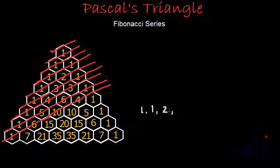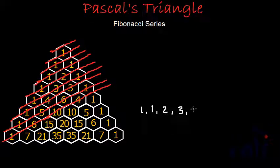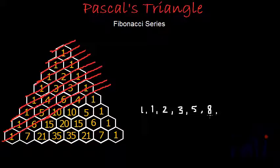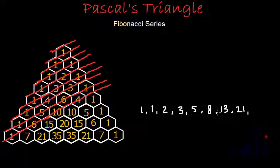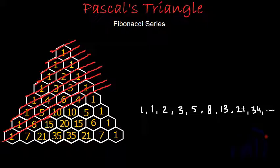The fourth term will be the sum of the second and third terms, so 2 plus 1 is 3. The fifth term will be 3 plus 2, which is 5. The sixth term will be 3 plus 5, which is 8. Then we have 8 plus 5 is 13. Then 13 plus 8 is 21. Then 21 plus 13 is 34, and this will continue. So this is the Fibonacci series.